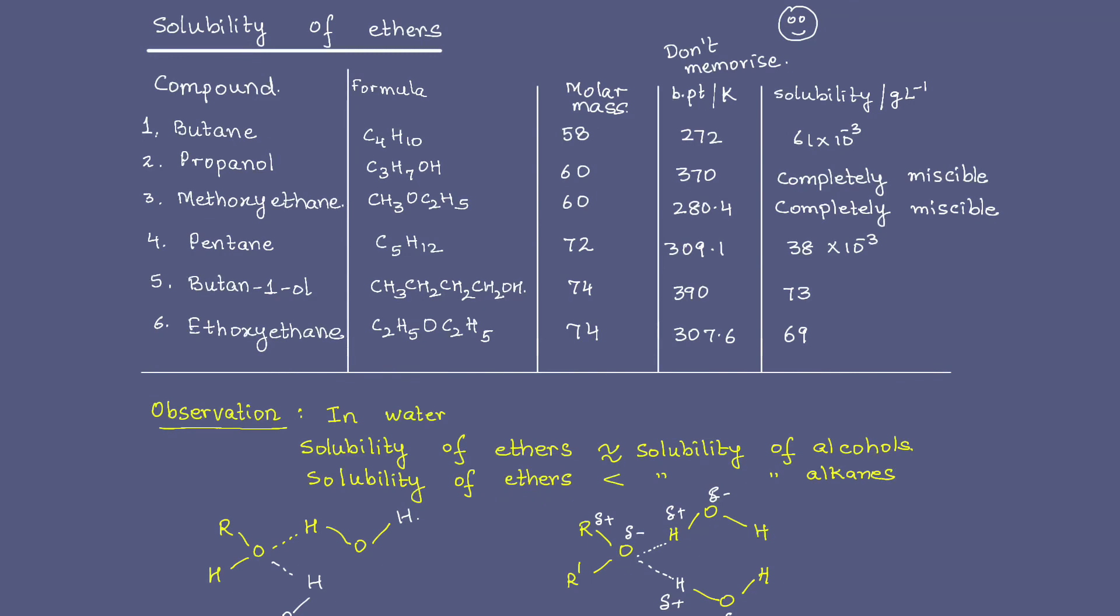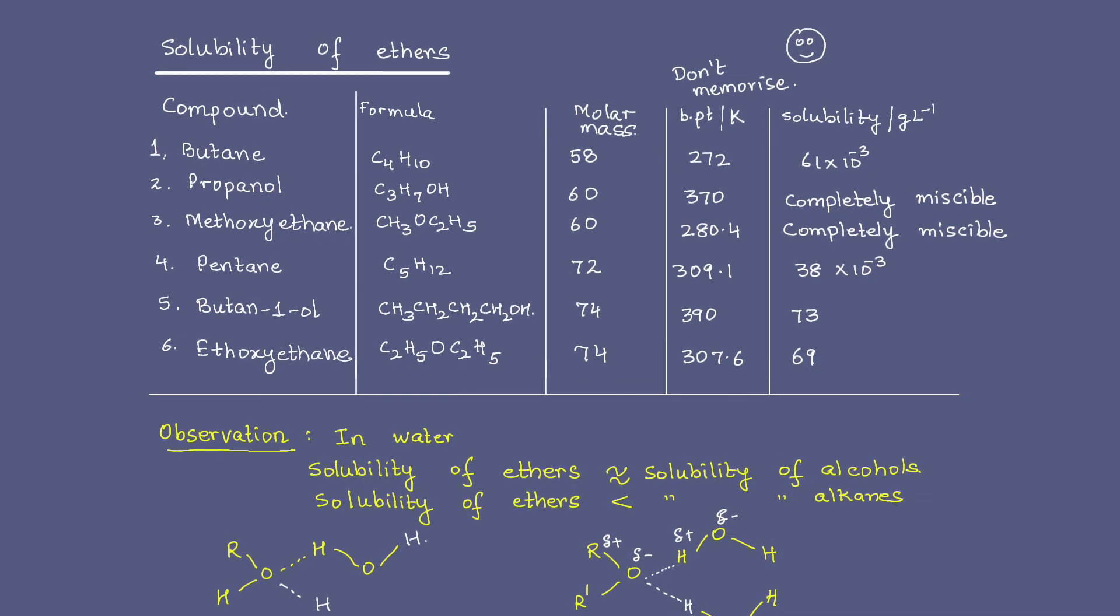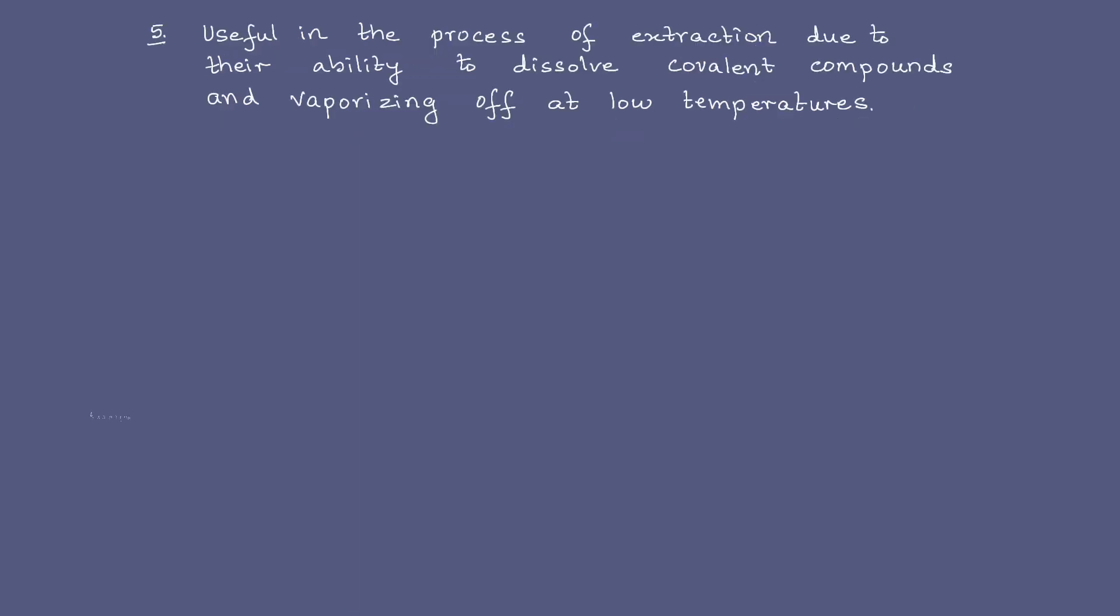I hope you've noted all of this down. Now, this behavior or property of ethers wherein they have low boiling point but their solubility is very high is actually used in the process of extraction of substances. They can dissolve covalent compounds, they are soluble in aqueous solutions as well, and they vaporize off at low temperatures. This way we can obtain the substance in pure form. Also, we have used ethers in the synthesis of a large number of organic compounds. Can you recall some compounds that require the presence of dry ether? Yes, the Grignard's reagent that we have done earlier.